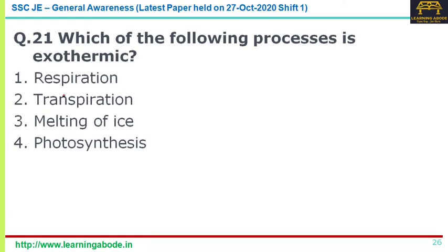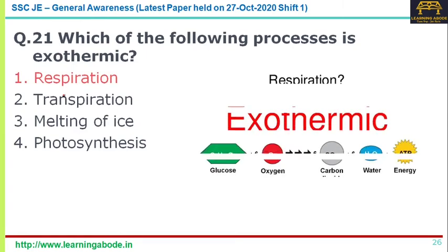Question twenty-one: which of the following processes is exothermic? Options are respiration, transpiration, melting of ice, and photosynthesis. Exothermic reactions or processes release energy, usually in the form of heat or light. This happens because the total energy of the products is less than the total energy of the reactants. The answer is respiration — that is an exothermic process. Answer option one.